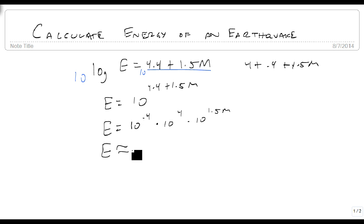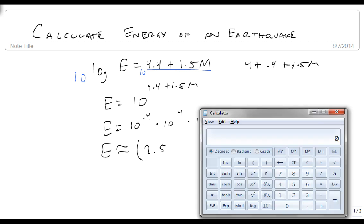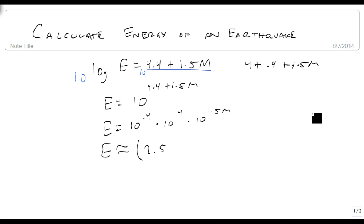Well, this is approximately equal - 10 to the 0.4 is approximately equal to 2.5. That's close enough to 2.5 that that's what we're going to use, times 10 to the 4 times 10 to the 1.5M. So if I know what M is, then I can figure out how much energy was released. And so that's what we're going to use.